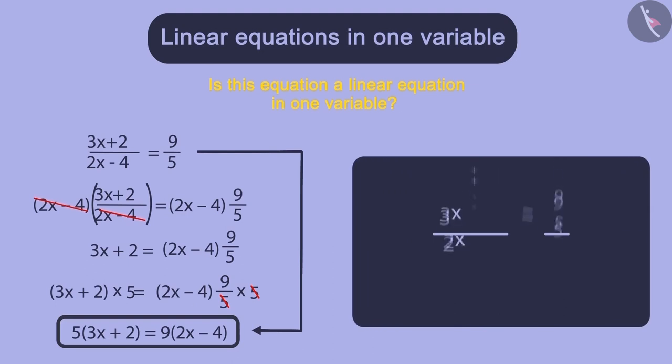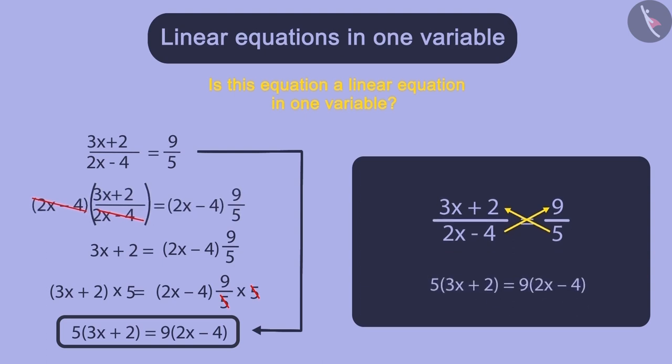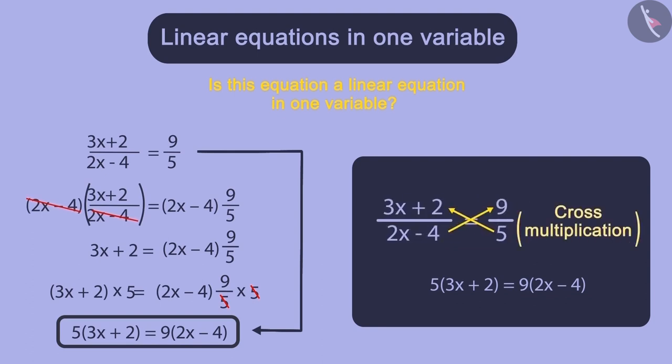Let us move the expressions which are present in the denominators of both sides to the opposite side. When we do that, they are multiplied with the expressions already present in the numerators. So, 5 is moved from the denominator of the right hand side to the numerator of the left hand side, and 2x minus 4 is moved from the denominator of the left hand side to the numerator on the right hand side. We can see that we have got the same equation in just one step. We have seen here that the expressions of denominators are multiplied when they are moved to the other side. This method is called cross multiplication.